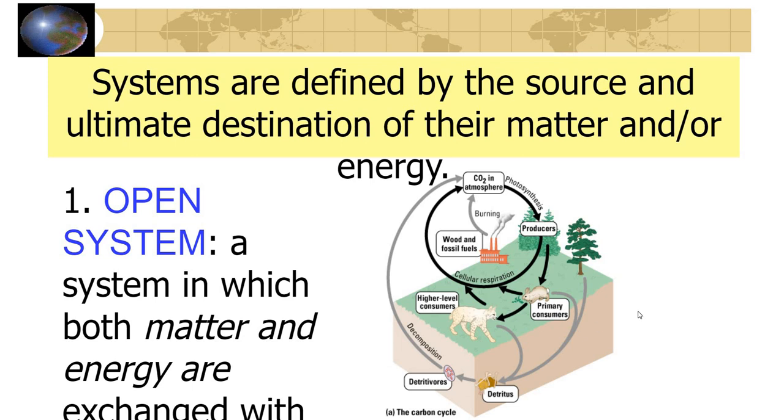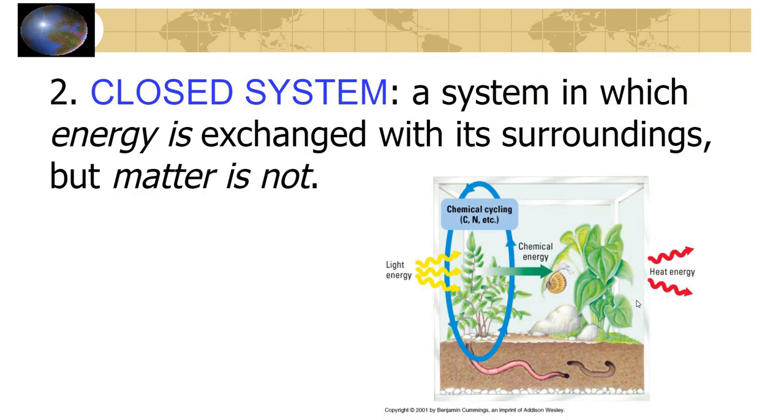In contrast to that, you could have a closed system. In a closed system, you're only having energy being exchanged. In other words, the matter is constant. In this terrarium over here, for example, it's sealed up. I would indicate this in a model by having boundaries here. Light energy comes in. Energy goes out, but the mass actually is conserved inside of here.